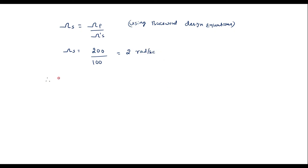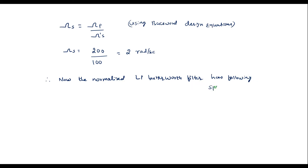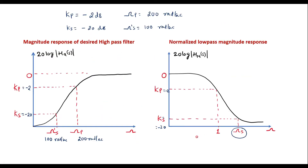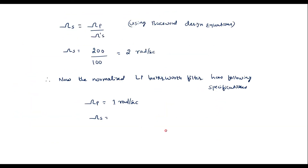Therefore, the normalized low pass Butterworth filter has the following specifications: omega_p is 1 radian per second, omega_s is 2 radians per second, Kp equals minus 2 dB, and Ks equals minus 20 dB.